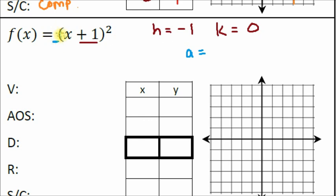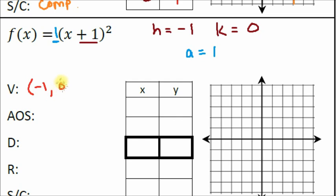Our a value: there's no number in front, so it must be one — not zero, because zero would make the whole expression zero. One times anything just gives you that same thing back. So our vertex is h and k: (negative one, zero).